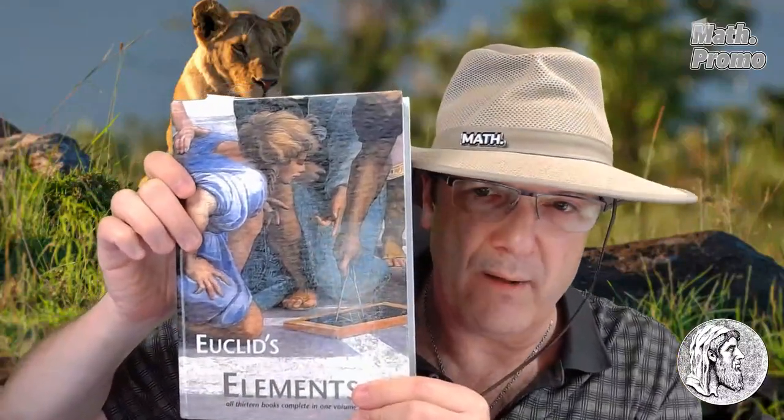Well, fellow geometric explorer, congratulations on surviving this trek. It wasn't that painful, was it? Before we wrap up, please remember to check out this video's description and see how you can get your own copy of Green Lion Press's Euclid's Elements, all 13 books in one volume, plus links to a couple other great related books.